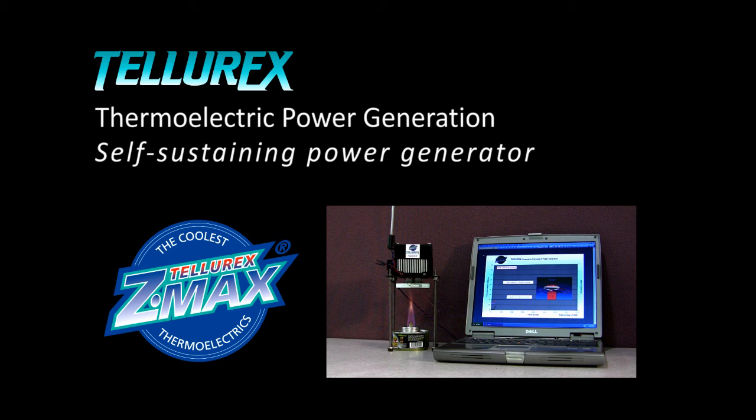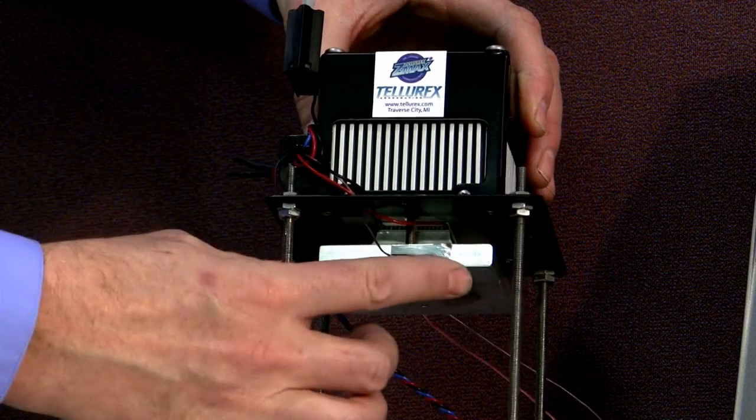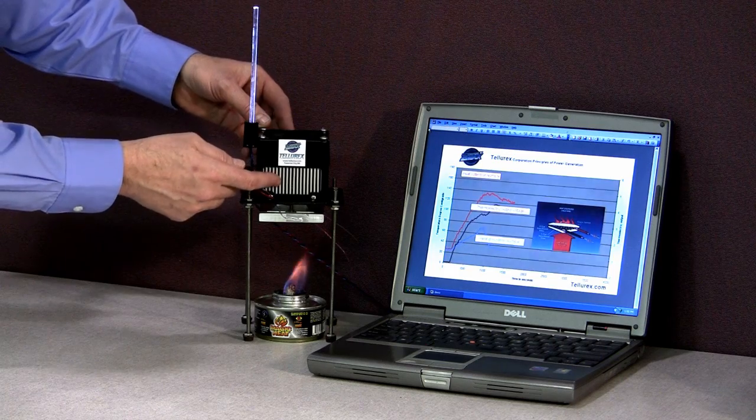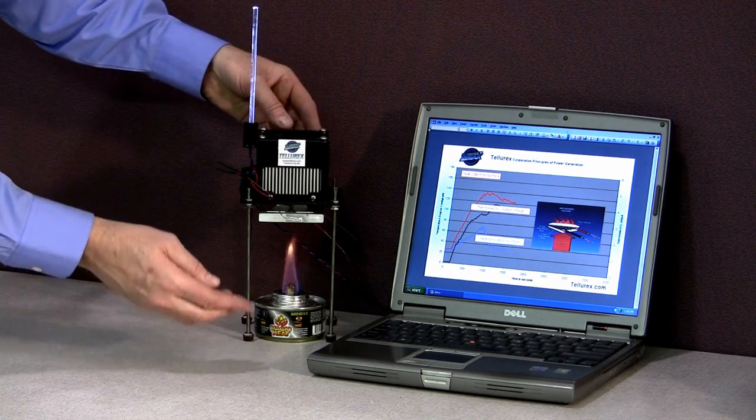This second demonstration shows a self-sustaining power generator. The heat is absorbed on one side and passes through the thermoelectric device and is dissipated through the heat sink fan combination.